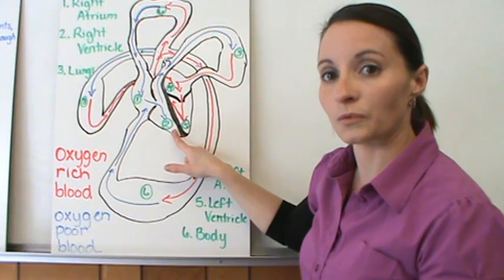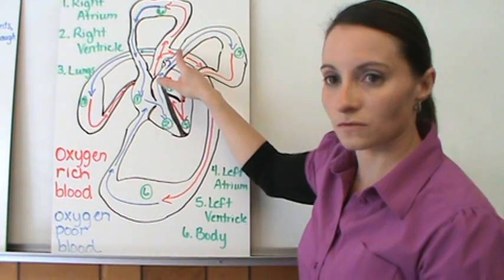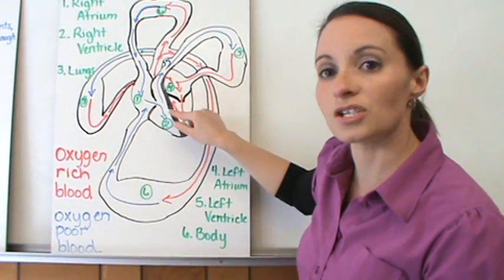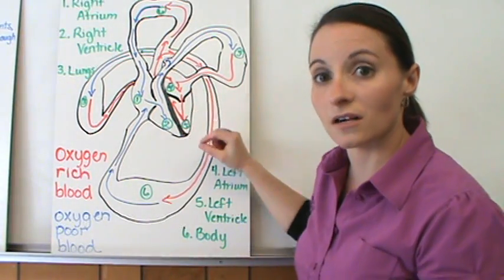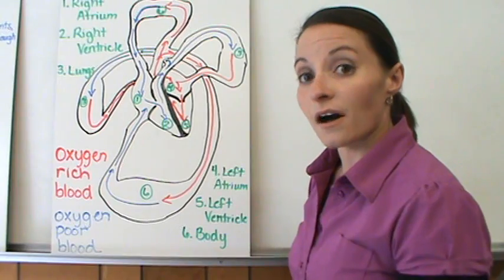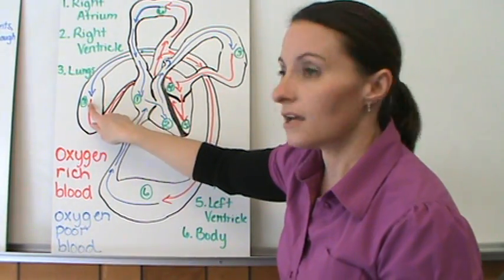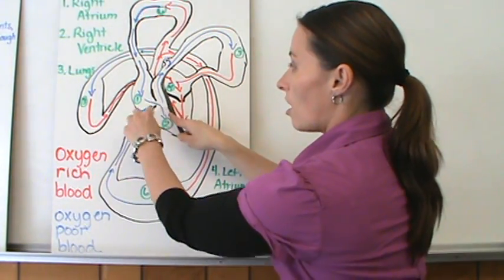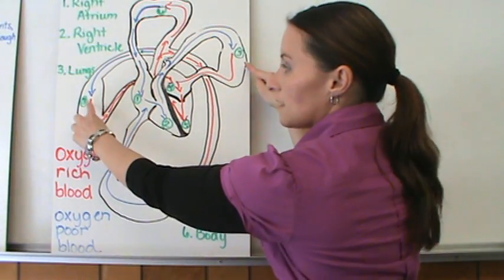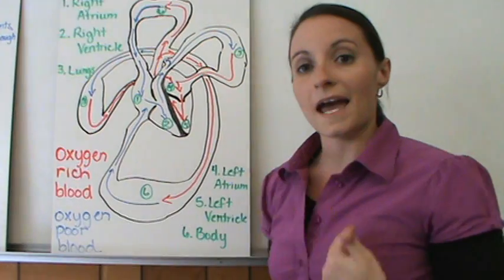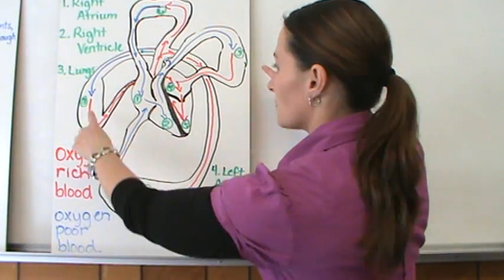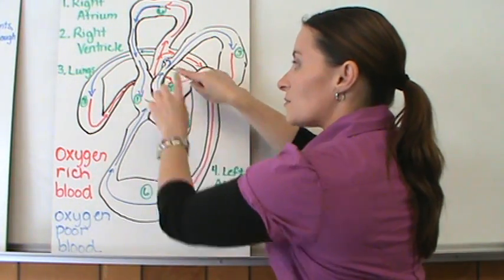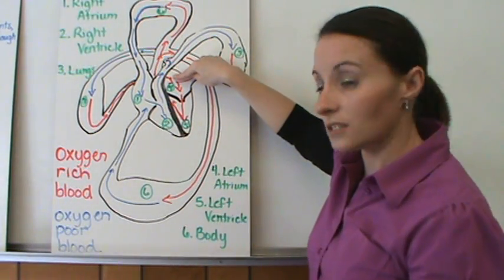Blood gets pumped from the right atrium into the right ventricle, and then from the right ventricle it gets pumped out of the heart. The blue blood shown here is oxygen-poor blood — blood that does not have oxygen in it yet, with a lot of carbon dioxide. This blood needs to go towards your lungs. Your heart pumps that blood out to your lungs, and your lungs take the carbon dioxide out of your system and put oxygen in. Now we have oxygen-rich blood, which comes back into your heart.